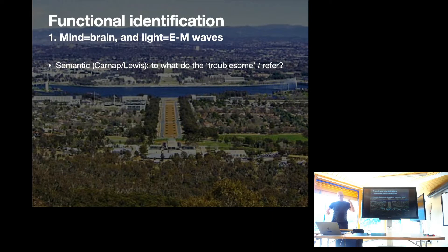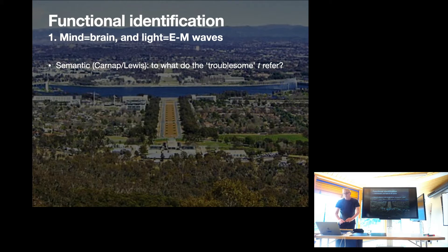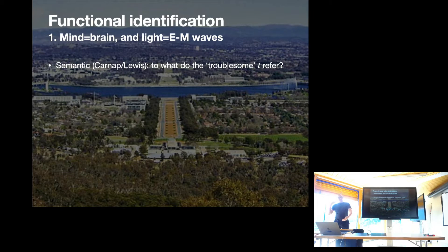In the ontological mode, the question is more focused on what are those things — what is their nature? Starting from the semantic point of view, the general picture Lewis presents is: I have some theory T which has some new theoretical terms t in it, and the first question is what do those t's refer to? So the goal is to establish reference — understand how they're going to be referential.